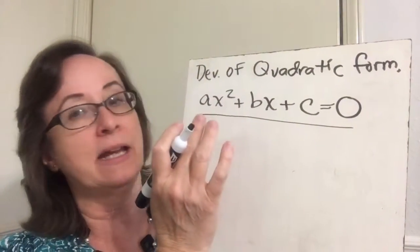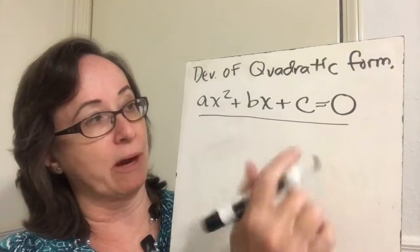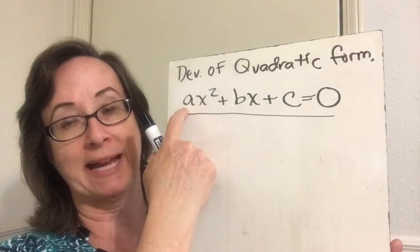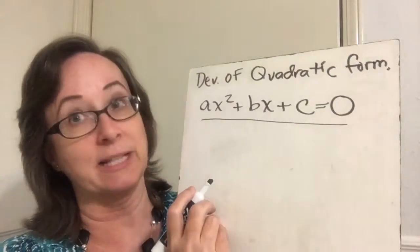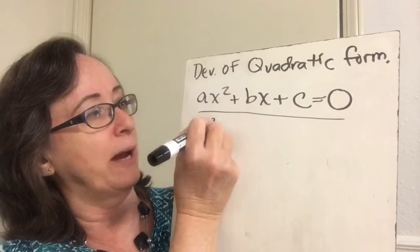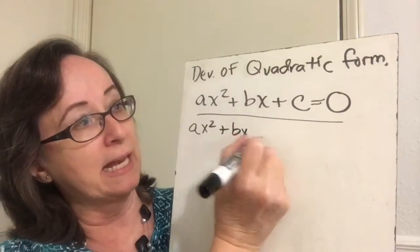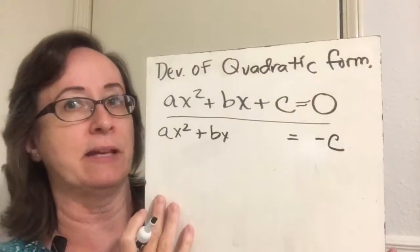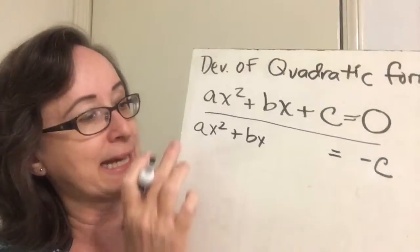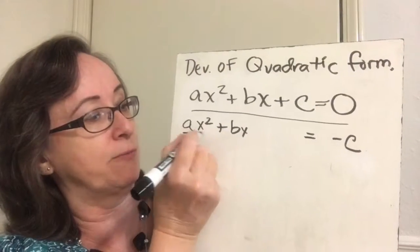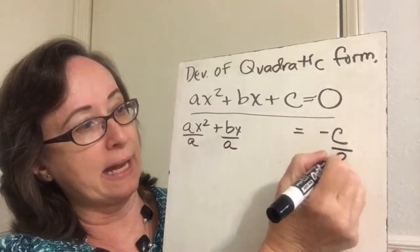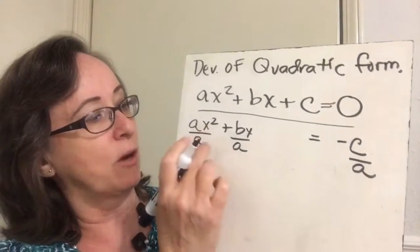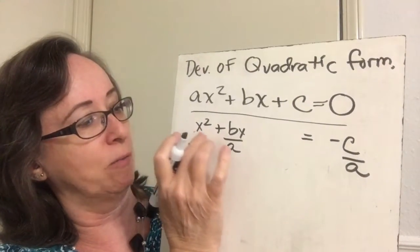The first thing we're going to do is get it ready to complete the square. Remember my constant needs to be on the other side, and this first term — my x squared term — needs to have a one coefficient, so that's what I have to work on first. So I'm going to have ax squared plus bx on the left, leaving a space to complete the square, subtract c, so I get a negative c on the other side. Then, because I can't complete the square until this is a one, I'm going to divide by a, divide by a, and divide by a all the way across. And now this is a one x squared.